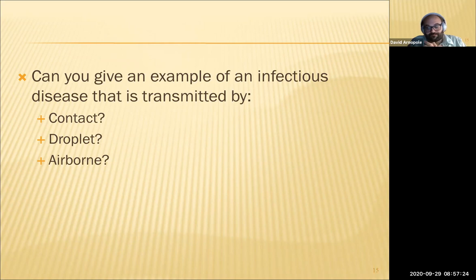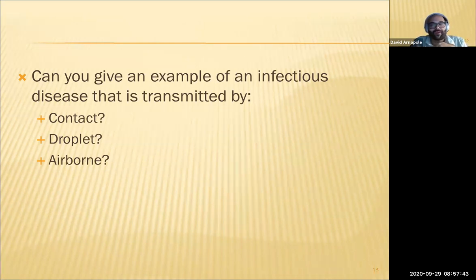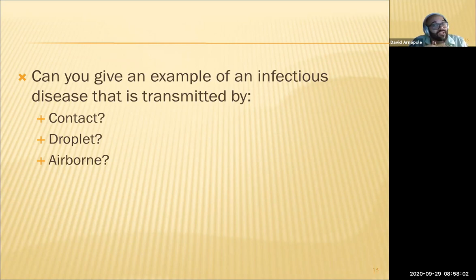For airborne precautions: TB goes here — TB patients must be in a negative pressure room with double doors, their own air supply constantly filtered. Also varicella, measles, and depending on the week, COVID-19. COVID-19 can fall under droplet or airborne — last week it was airborne, right now it's droplet. We're basing everything on your textbook, which doesn't discuss COVID-19, but things can change.